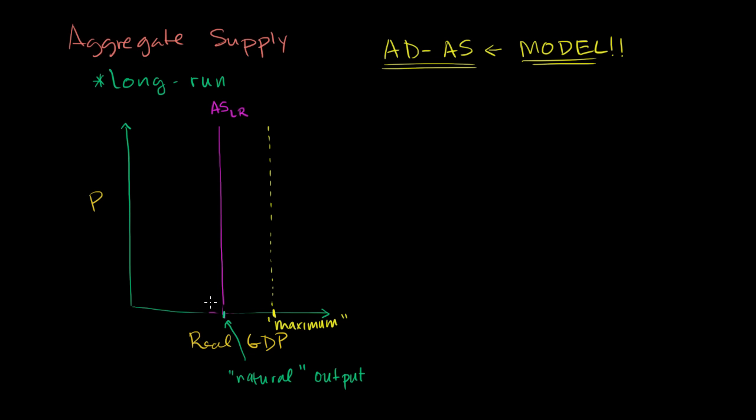Now what we're going to talk about in this video is aggregate supply in the short run. What we're going to see is, for this model to work, for the aggregate demand, aggregate supply model to work, we have to assume an upward sloping aggregate supply curve in the short run. Let's assume that this is our current level of prices. This is our long run aggregate supply - it's not depending on prices, just kind of a natural level of output.